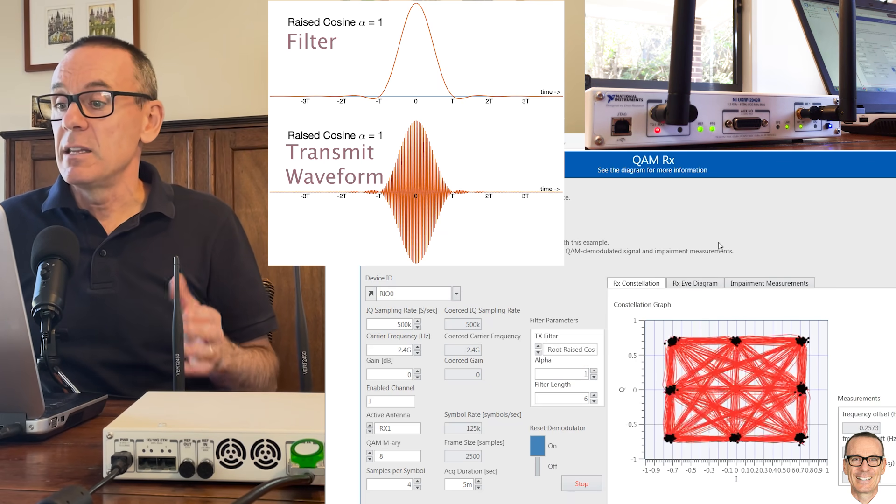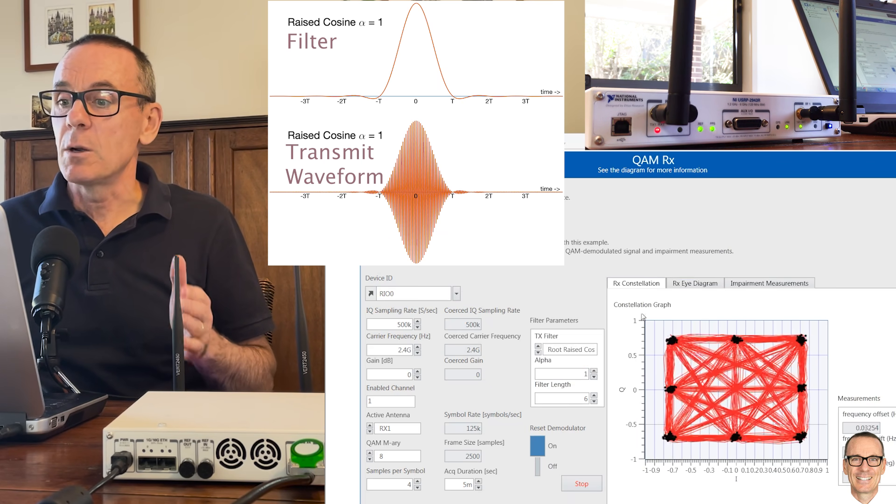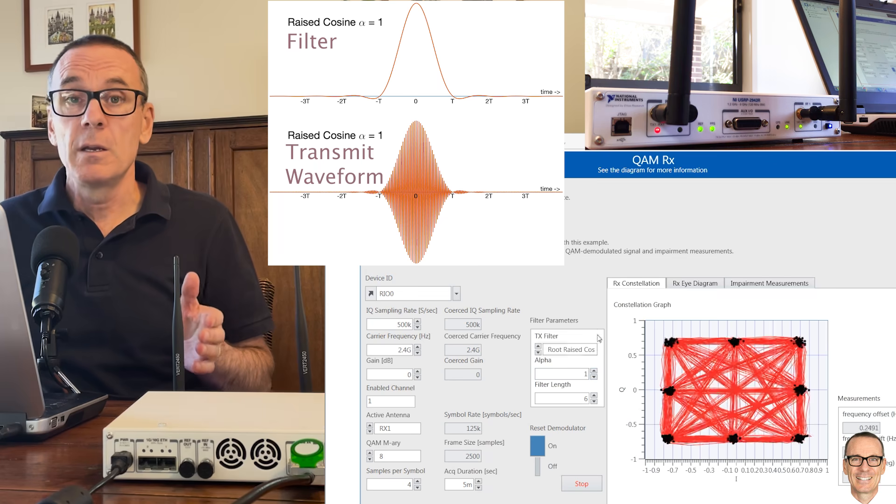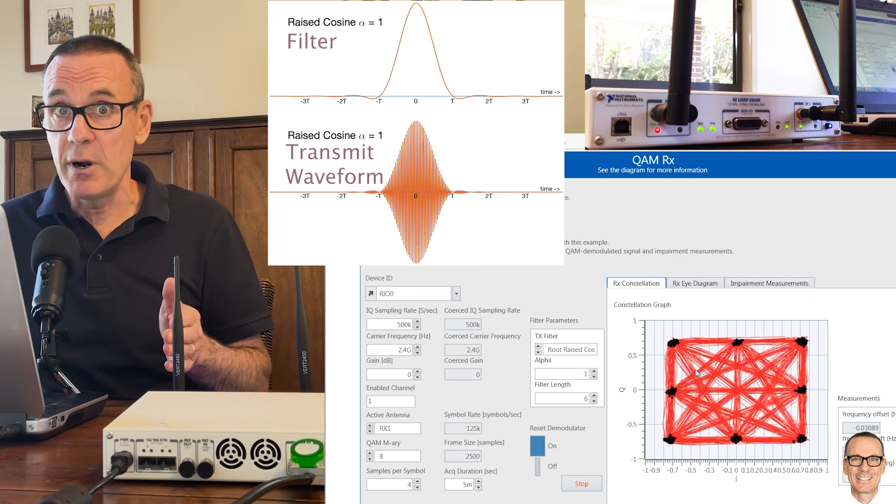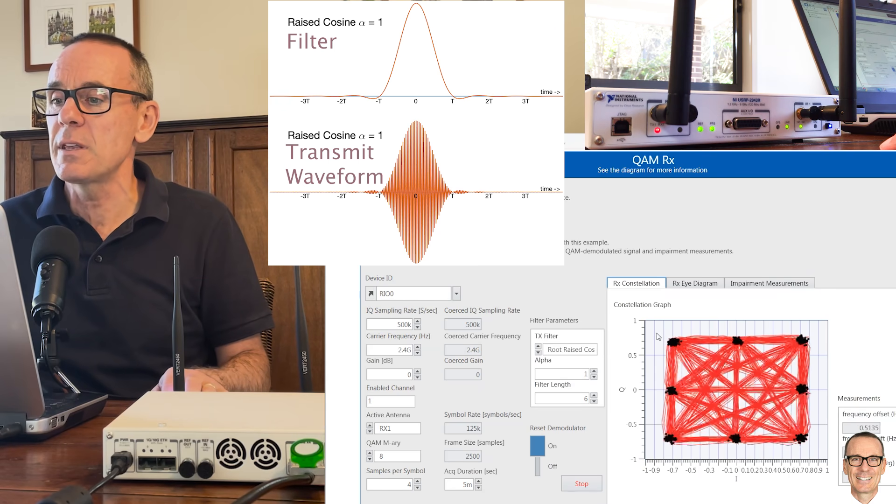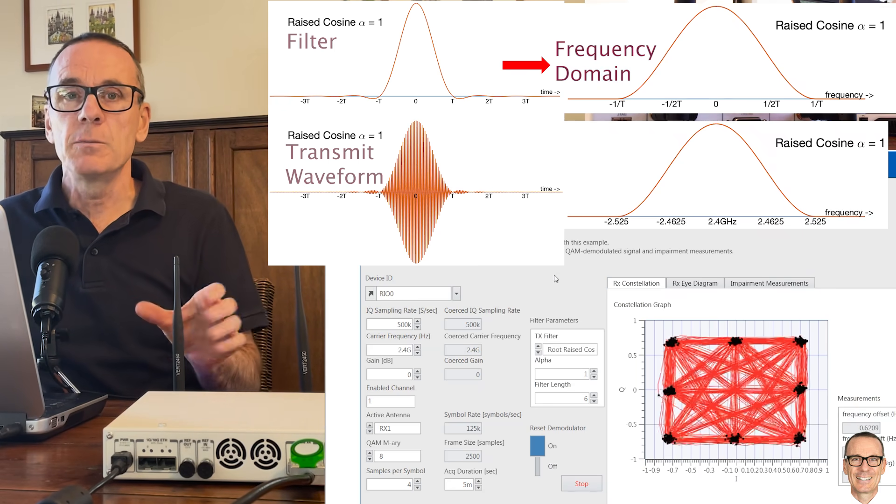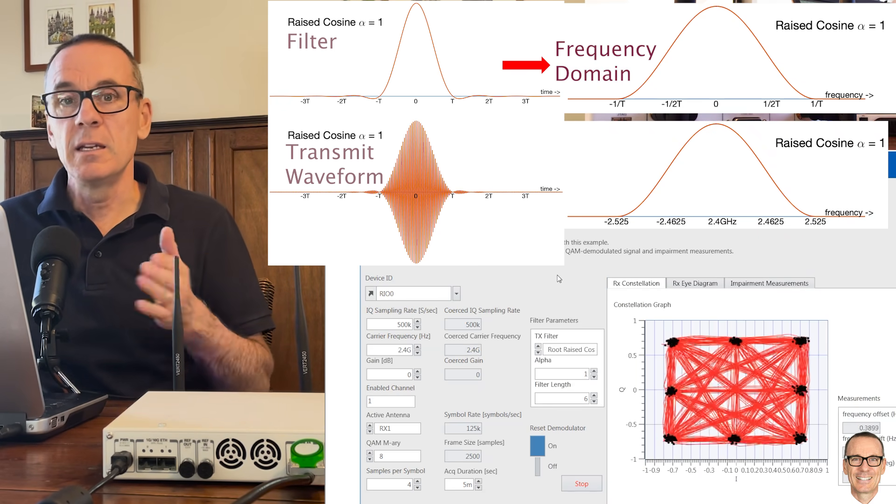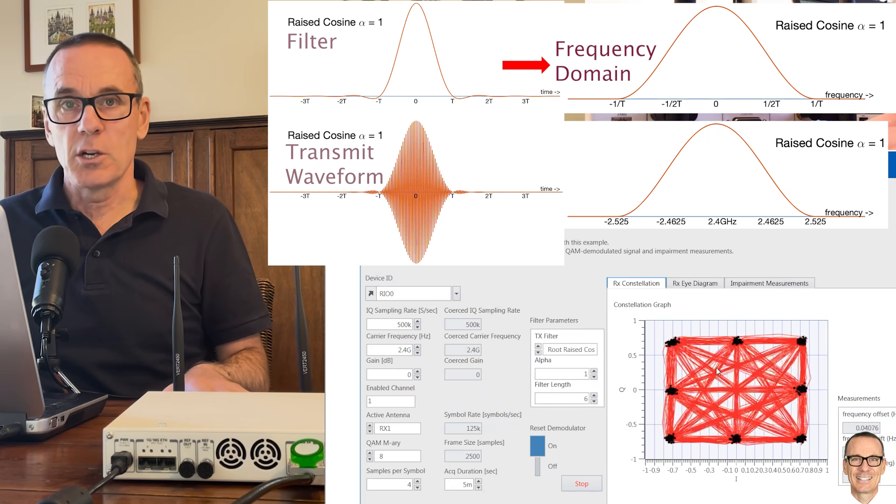In this case they're nicely separated. So when we had alpha equals zero they were not nicely separated. We were trying too much to cram into the narrow bandwidth. When we relax that and we use alpha equals one then we get a nicer constellation.